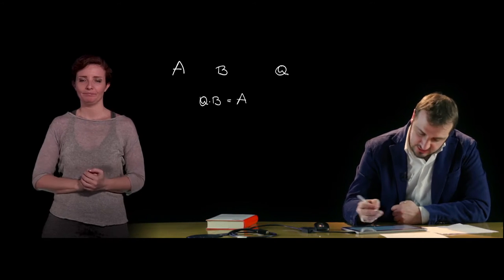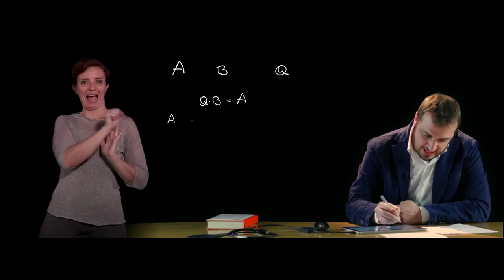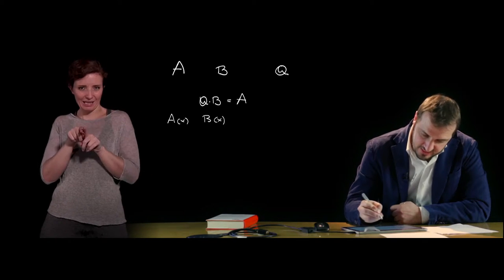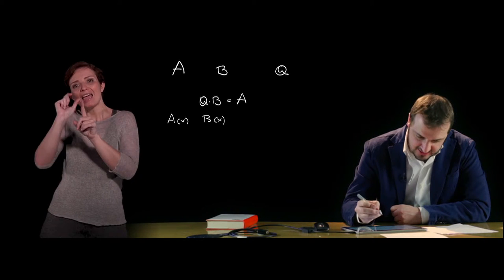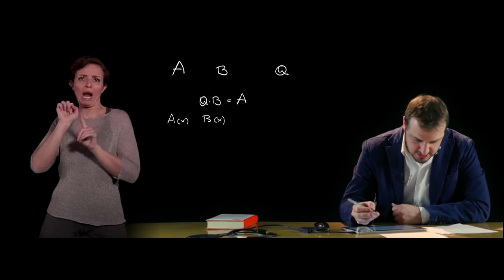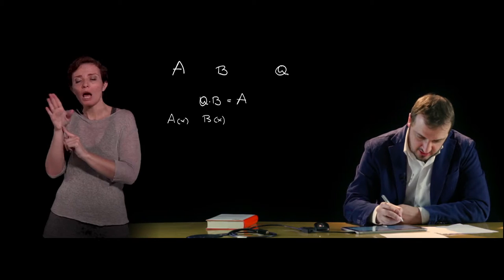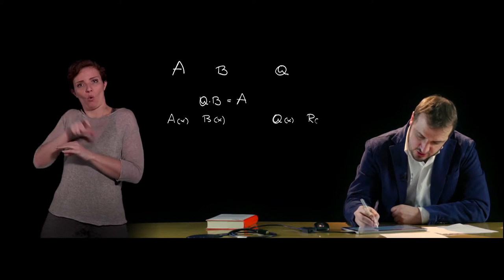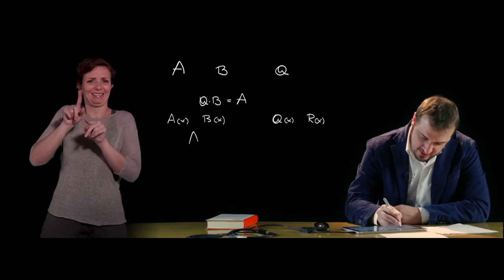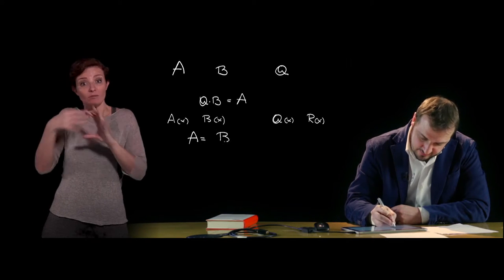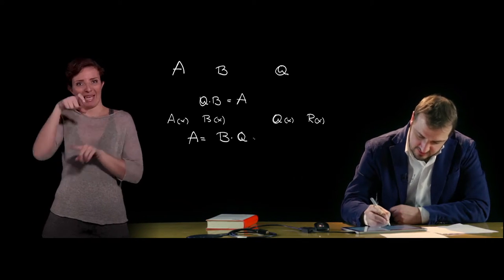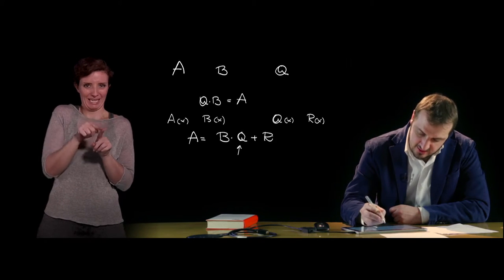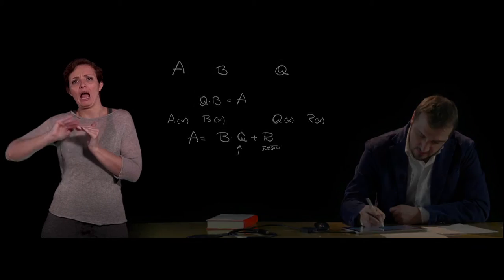Generalizing further: given two polynomials A(x) and B(x) in the variable x, with B of degree less than or equal to the degree of A, it is always possible to find two polynomials Q(x) and R(x) such that A = B·Q + R, where Q represents the quotient and R is the remainder, which may or may not be present.